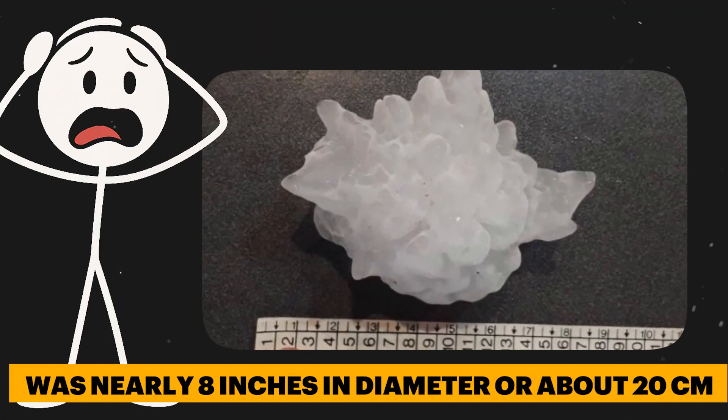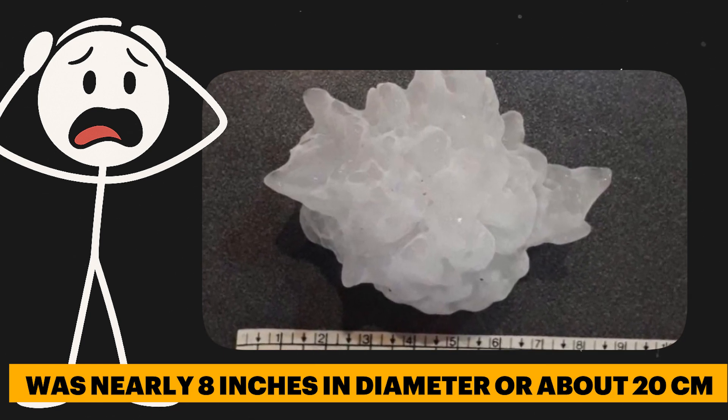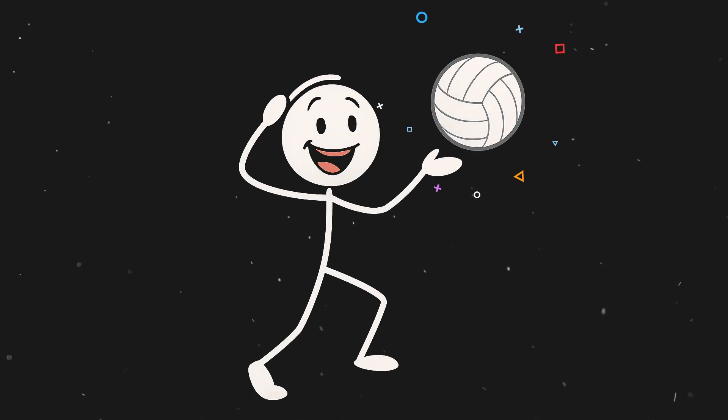Now, get this. The largest hailstone ever recorded in the US was nearly 8 inches in diameter, or about 20 centimeters. That's the size of a volleyball falling from the sky.